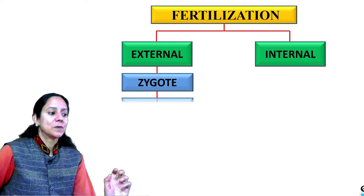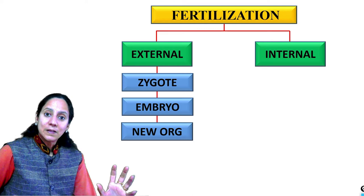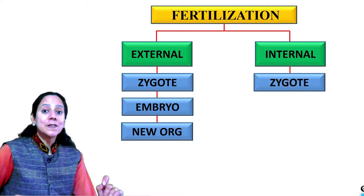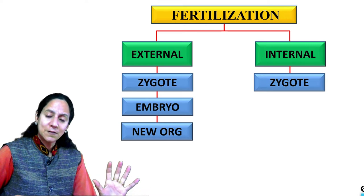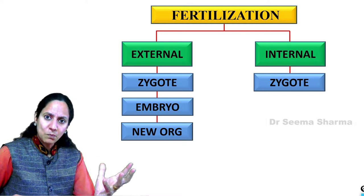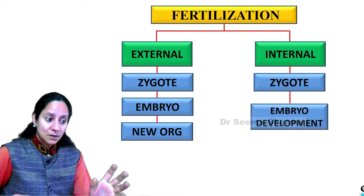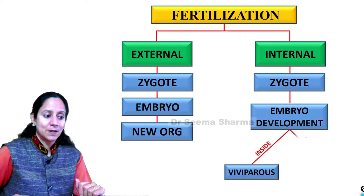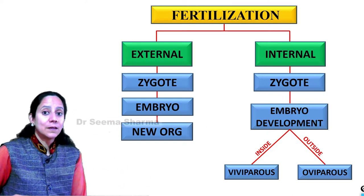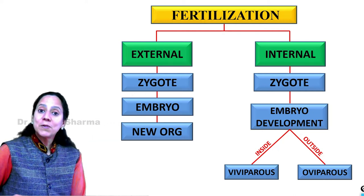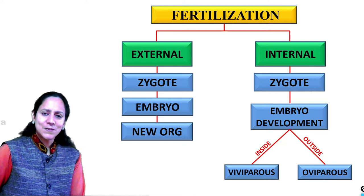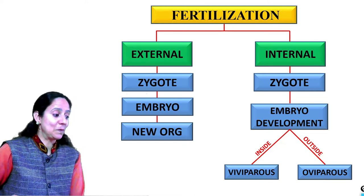In internal fertilization, zygote formation takes place within the reproductive system of the female's body. This single-cell zygote divides and re-divides, forming a group of cells and turning into an embryo. Embryo development is further of two types: if it takes place inside the female's body and then the organism is born, it is viviparous; and if the embryo develops outside the body within an egg, it is oviparous.